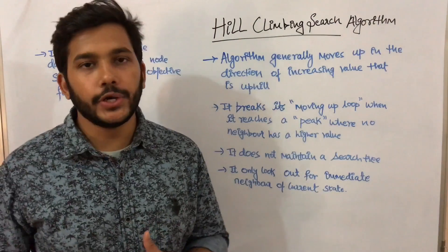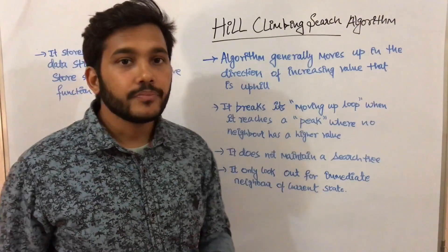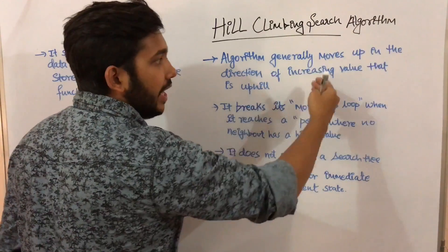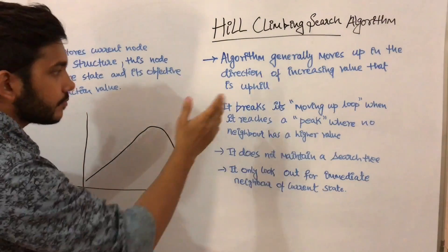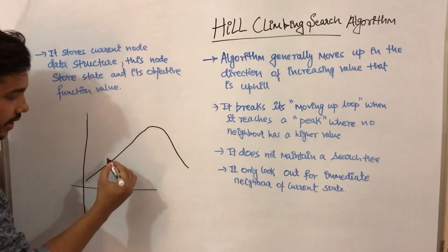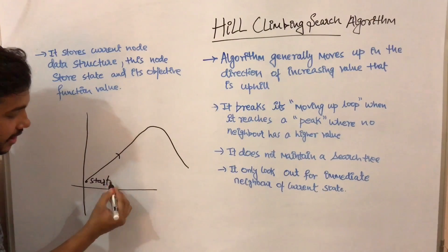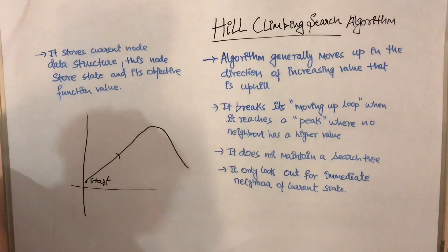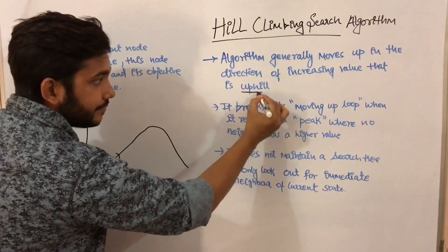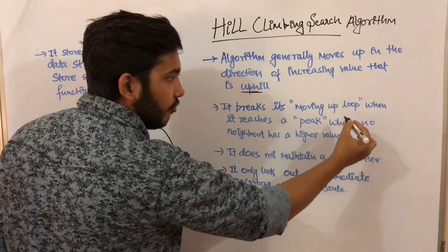In this video I am going to talk about the hill climbing search algorithm. This algorithm moves up in the direction of increasing value. Suppose this is our graph and the algorithm starts from the start node — it moves in the direction of upward. It breaks its moving-up loop when it reaches a peak, when no neighbor has a higher value.